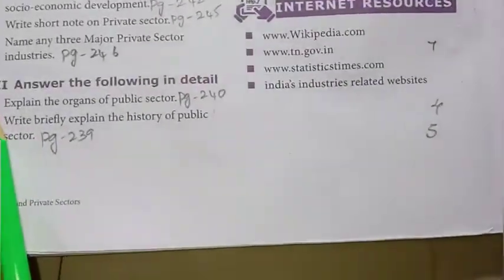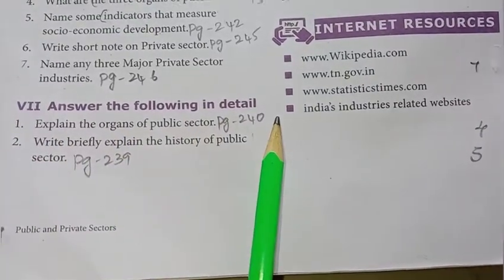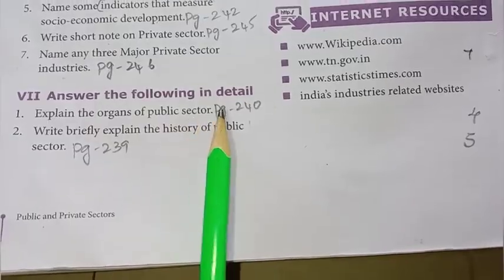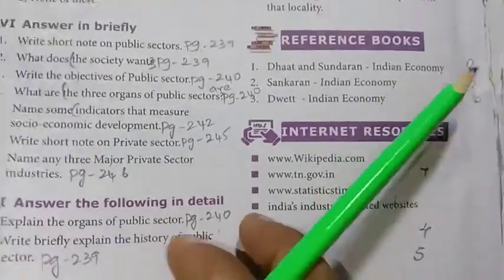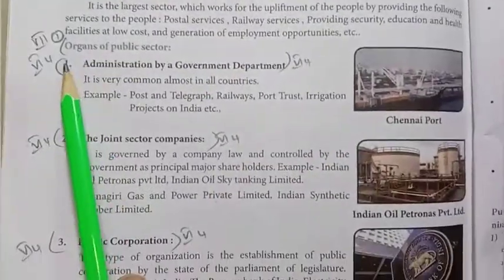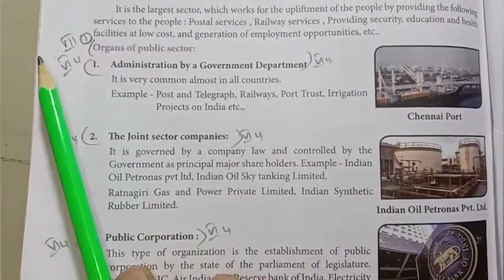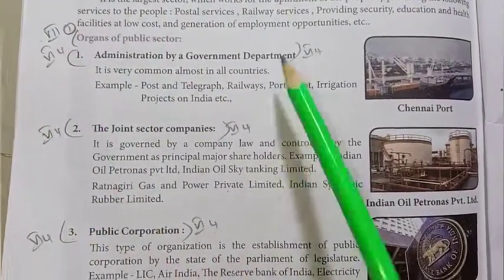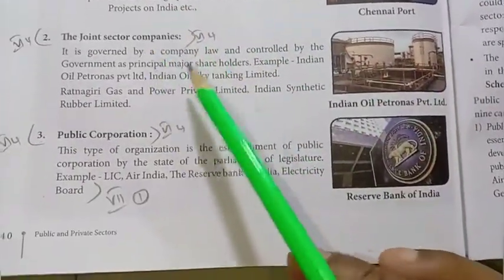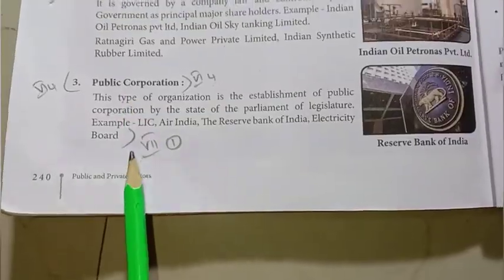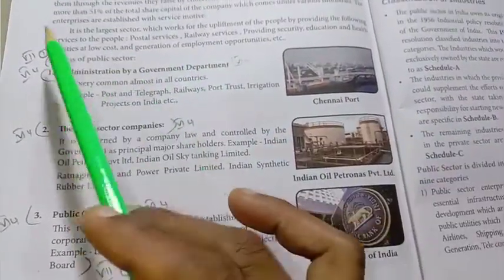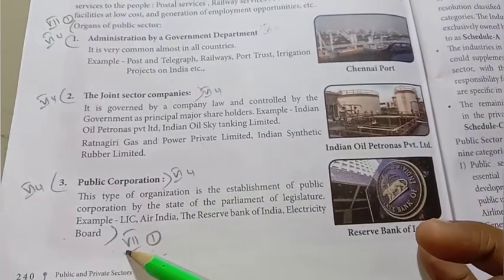Room number 7, answer the following in detail. First one: explain the organs of the public sector. Refer to page number 240. Write the full section starting from administration by a government department, then joint sector companies, then public corporation — covering up to the electricity board section.